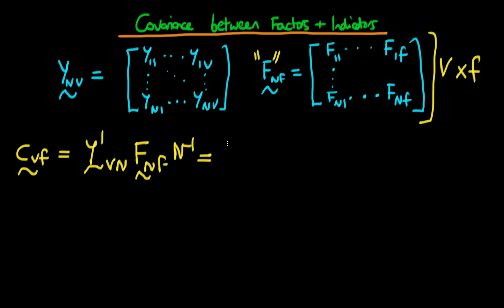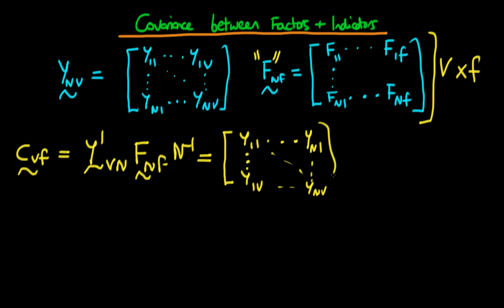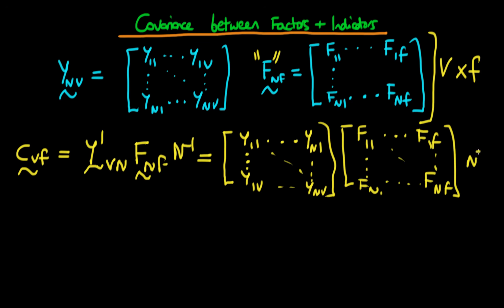If we carry out this operation, taking the transpose of the indicator scores we get a matrix with entries y11 through to y1v, going all the way through to yn1 and then ynv. We multiply that by the factor score matrix, which is f11 through to f1f, going all the way down to fn1 and across to fnf. We also multiply by the inverse of the sample size.